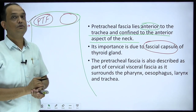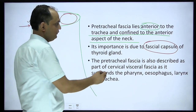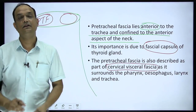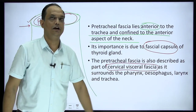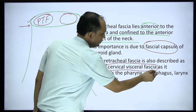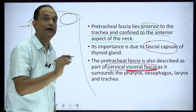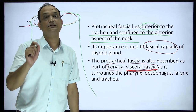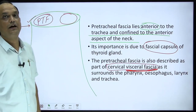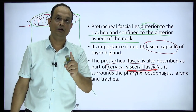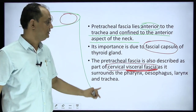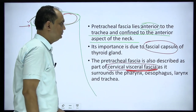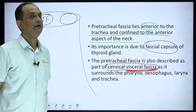The pre-tracheal fascia is also described as part of the cervical visceral fascia, as it surrounds the pharynx, esophagus, larynx, and trachea. The term 'cervical visceral fascia' is a common short-note topic - whenever you see this term, you have to write about the pre-tracheal fascia only. It does not include the investing layer or the pre-vertebral layer.